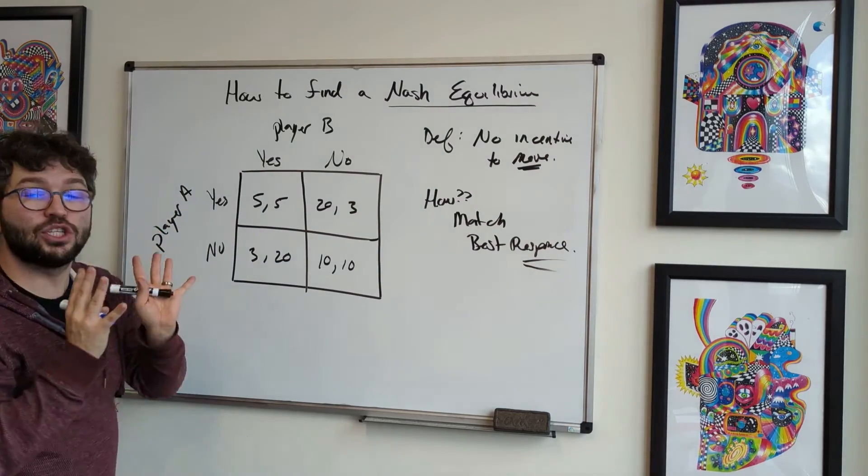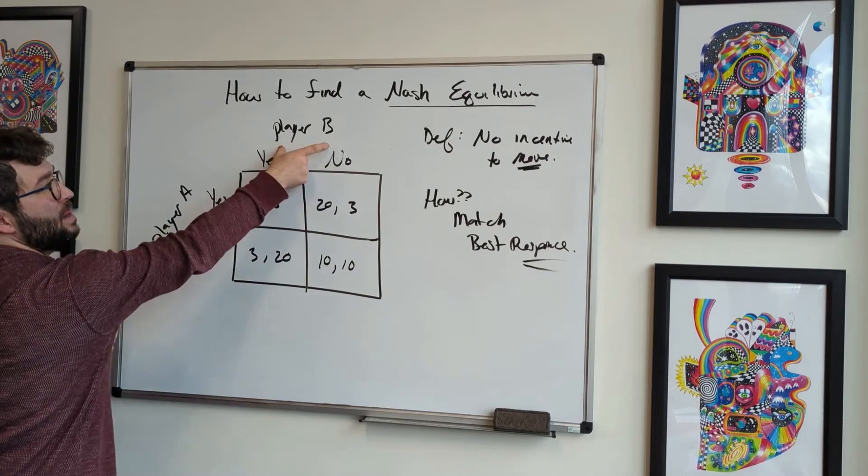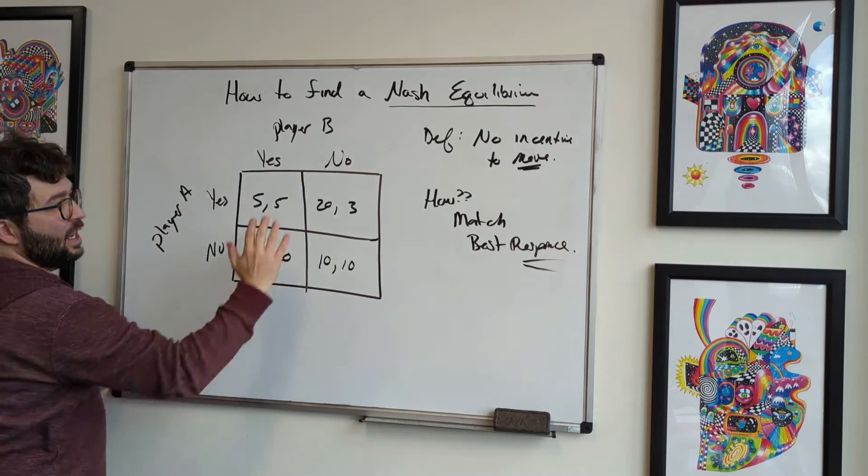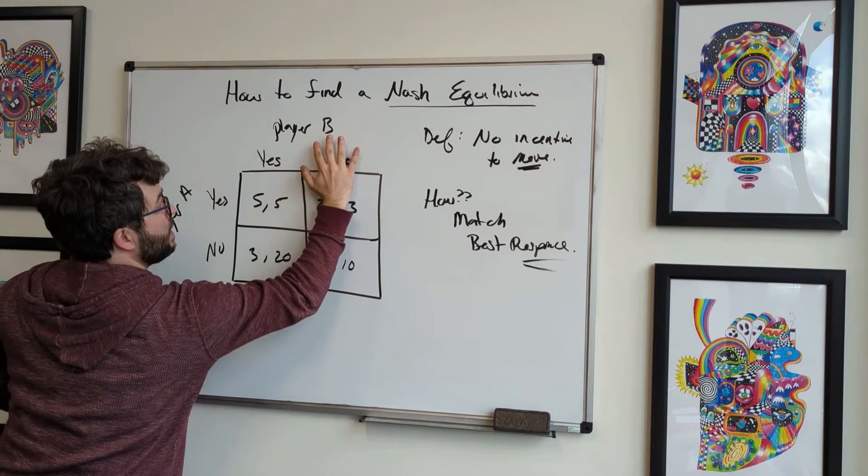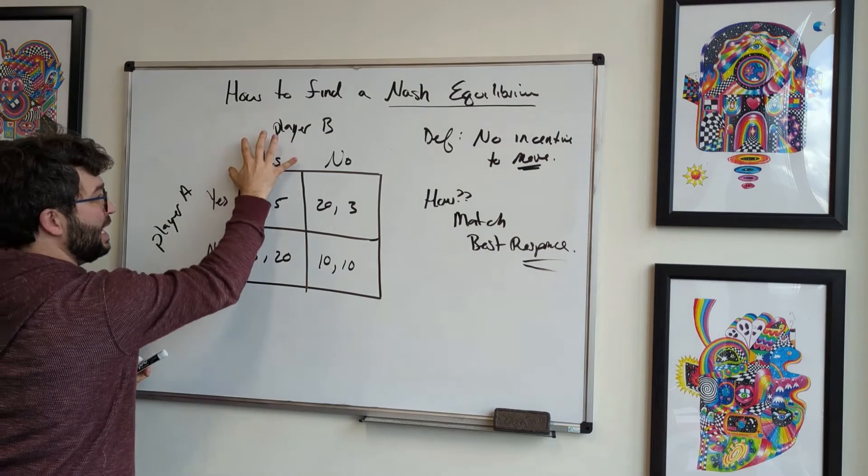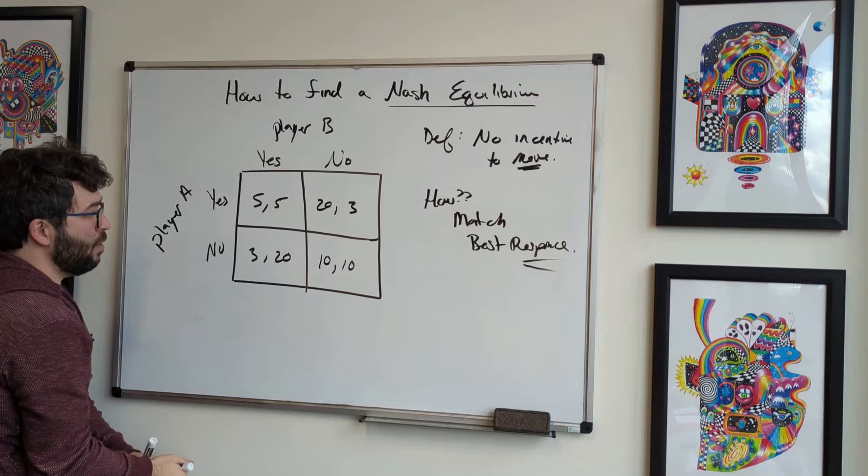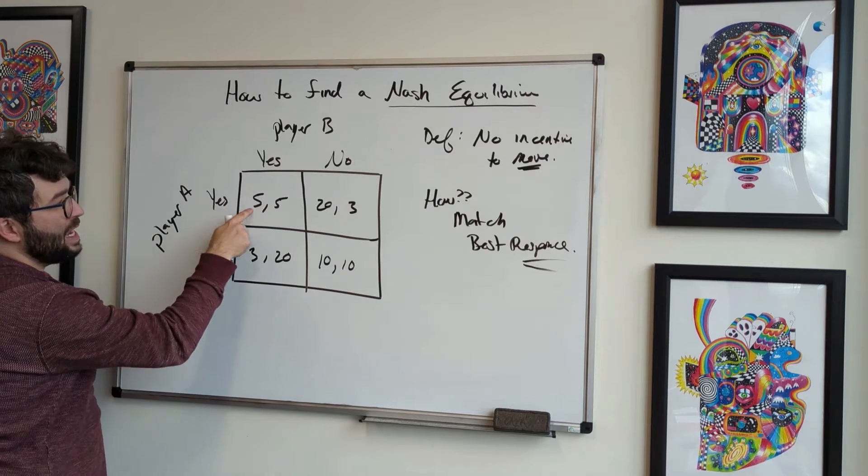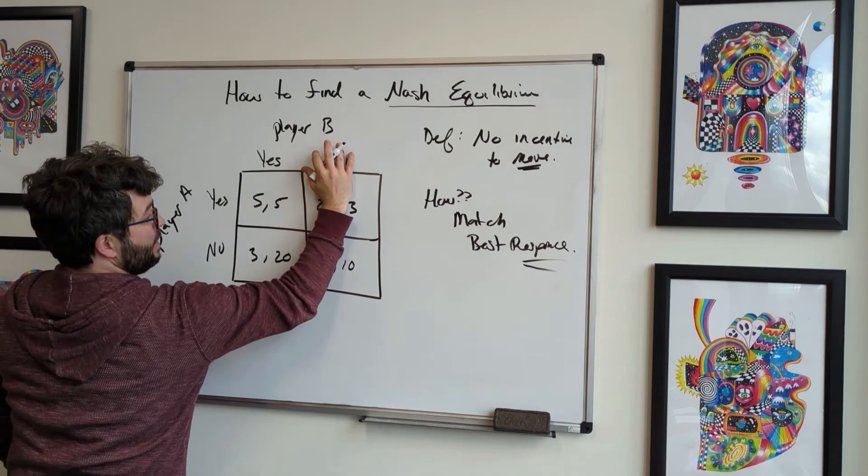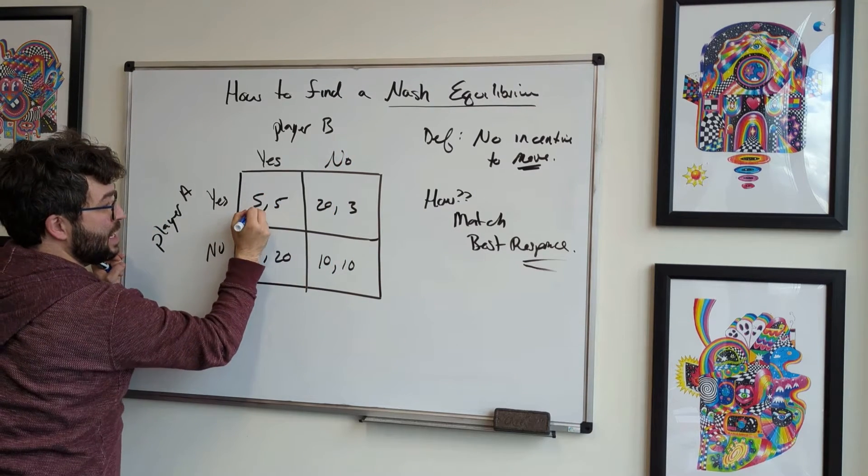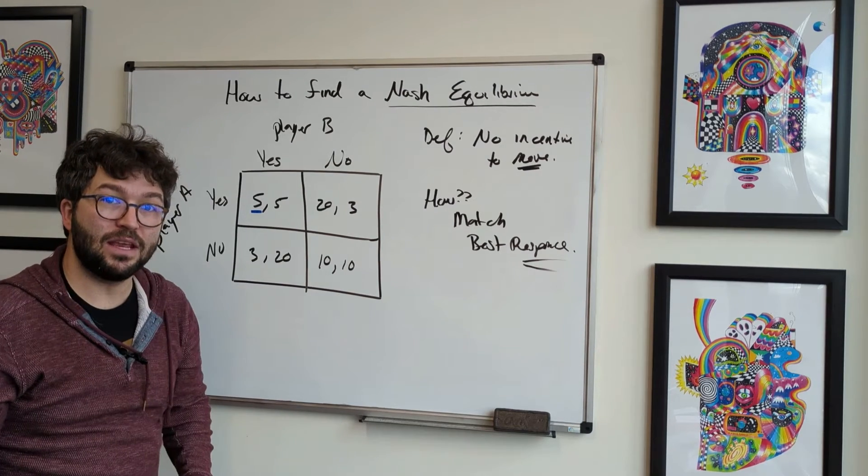The way we do that is we just assume one player is going to play something. So let's assume player B is playing yes. So we can cover up the no. So we're only looking at this column here. If player B plays yes, player A can play no and get three points or play yes and get five. Five is greater than three. So when I'm covering this up, I know that player A would like to be here. I'm just going to put a little underline just so I know that's the best response.